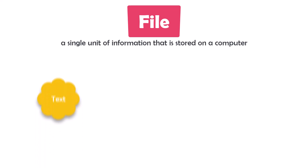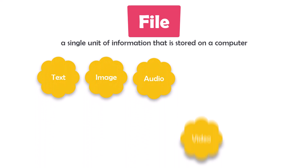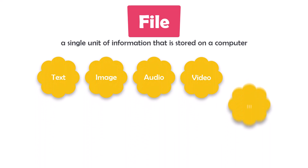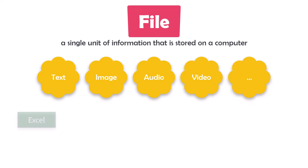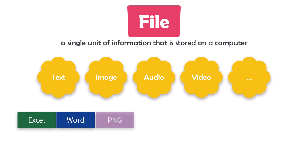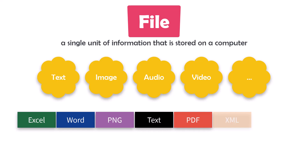Let's first understand what a file means. A file is a single unit of information that is stored on a computer. It can contain text, images, audio, video, or other types of data. Examples of files include Excel files, Word, PNG, text, PDF, XML, etc.